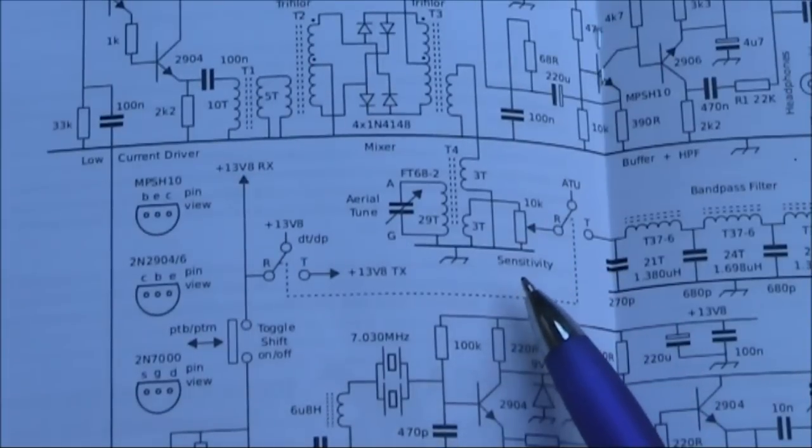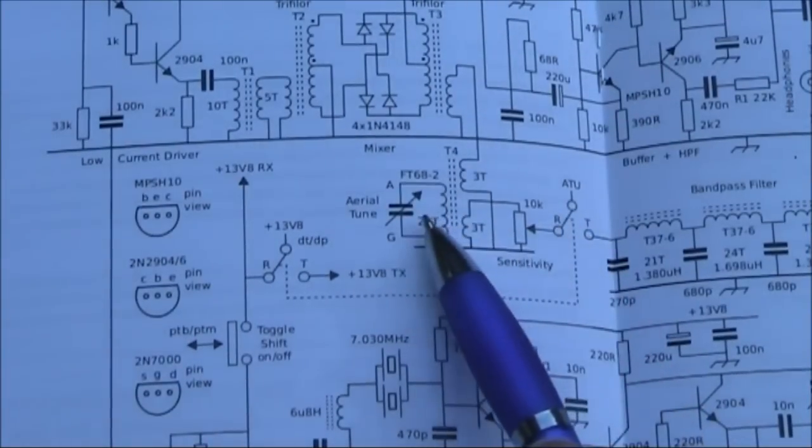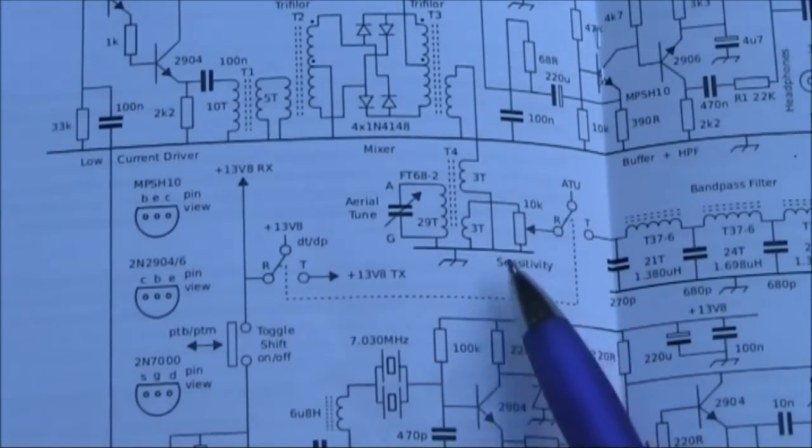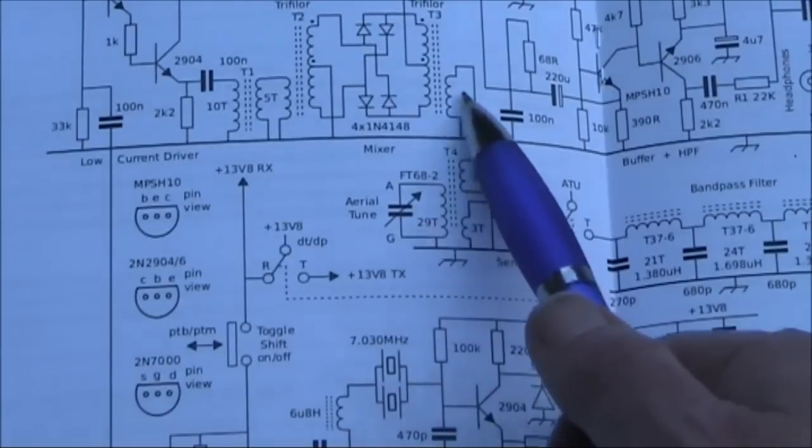What you can't leave alone though is the selectivity provided in the front end. In this case there's a single tuned circuit between where the signal comes in from the antenna, via an attenuator pot, into the balance mixer here.